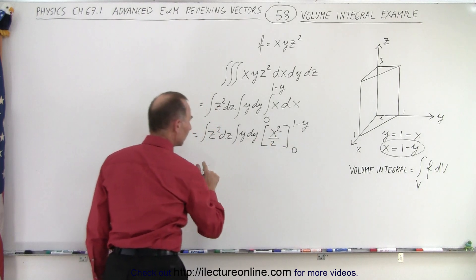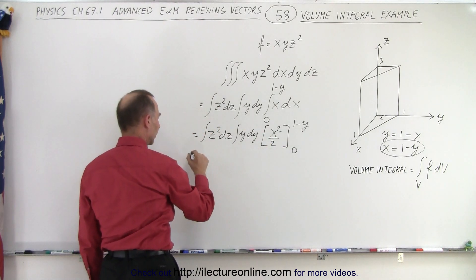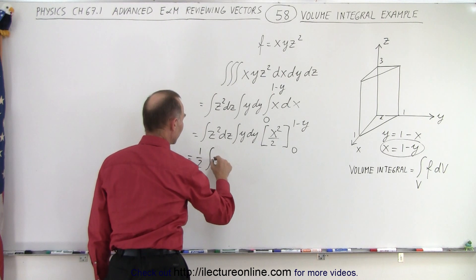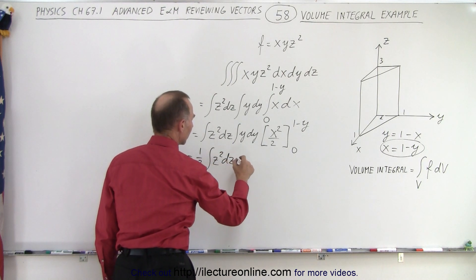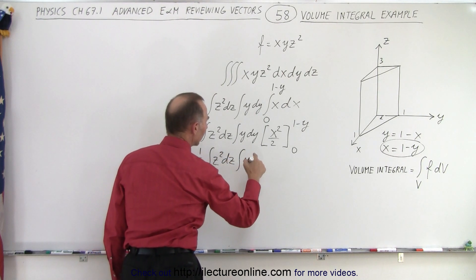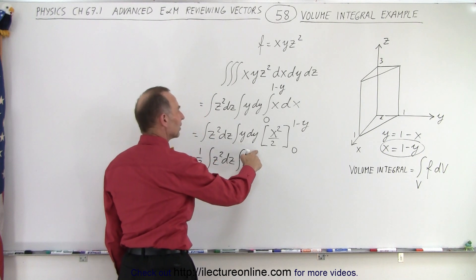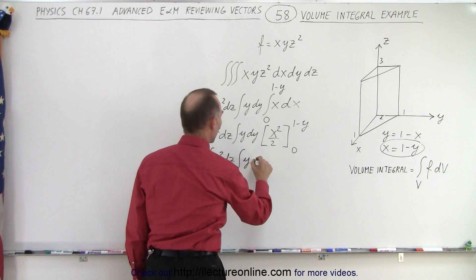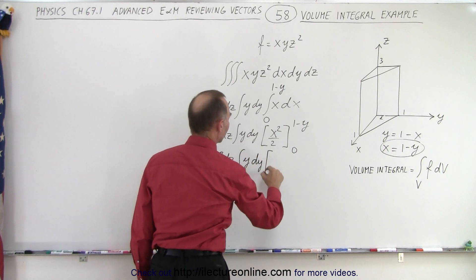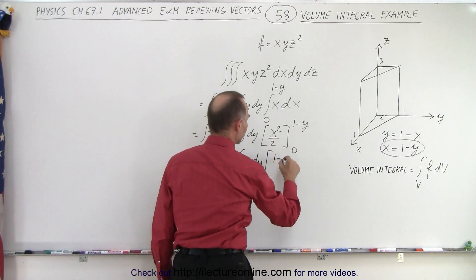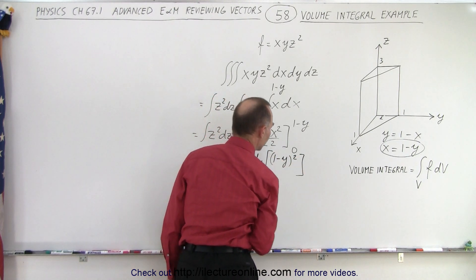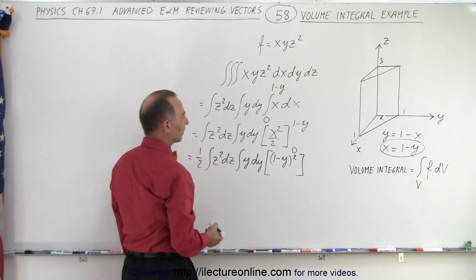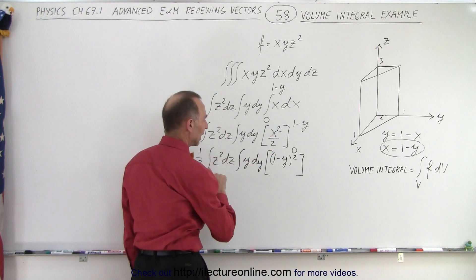So when we plug in the limit, we have the 1 half who goes to the front, so this is equal to 1 half times integral of z squared dz times integral of y. Well, let's see here. y times dy, and then we have to multiply that times 1 minus y quantity squared, like this. Plug in the lower limit, we get 0, so just the upper limit like that.